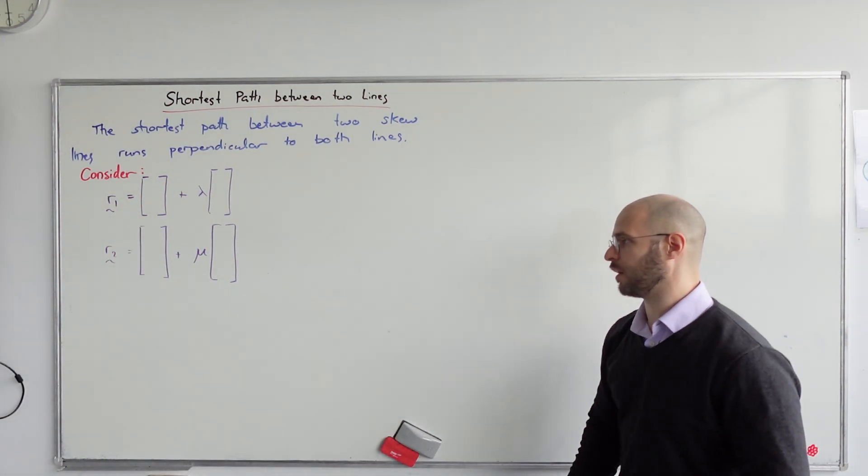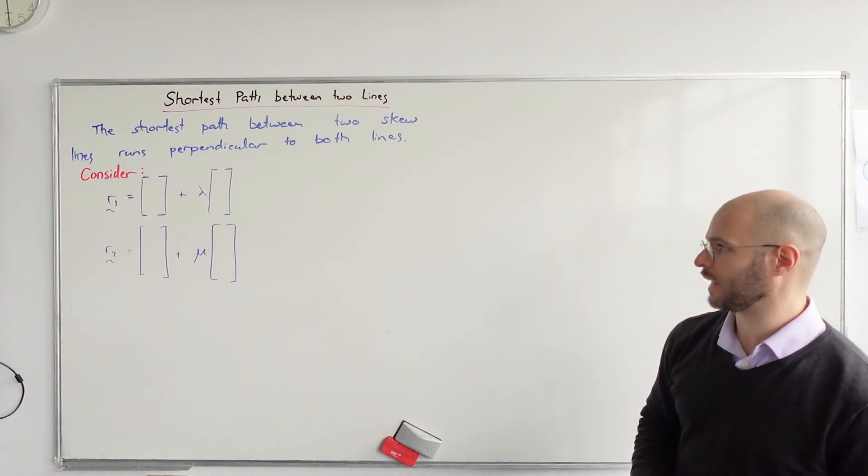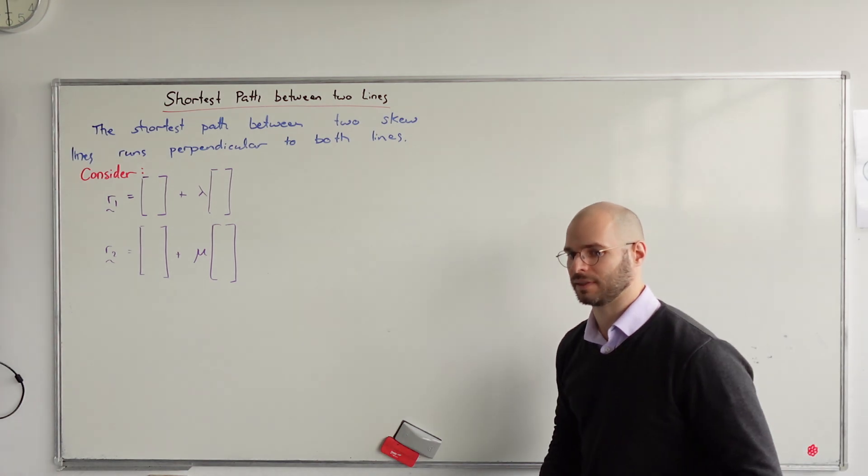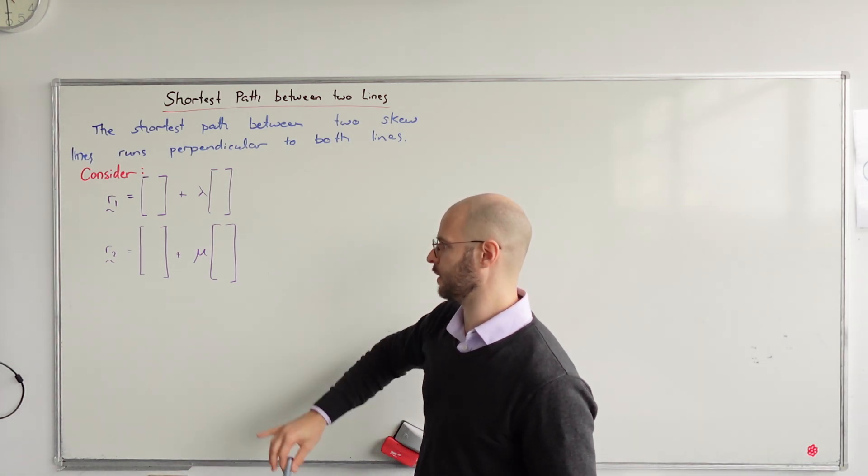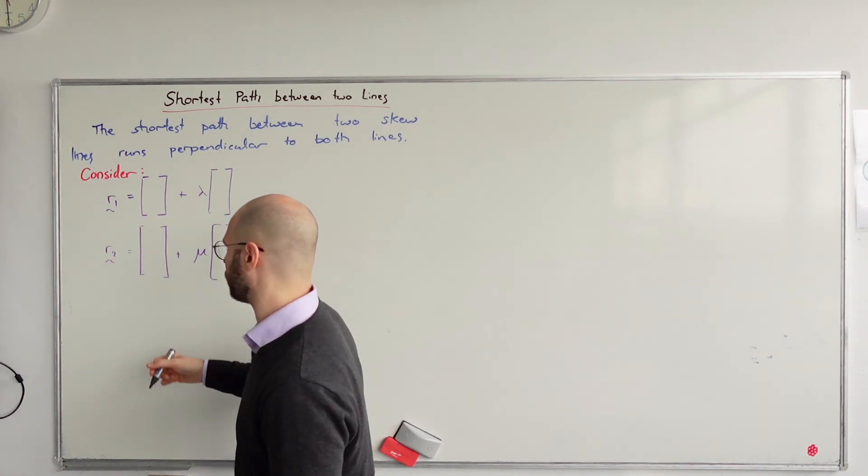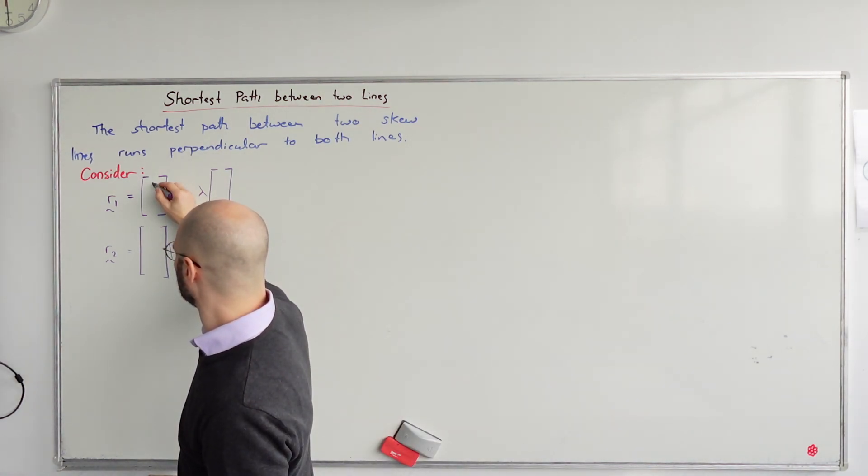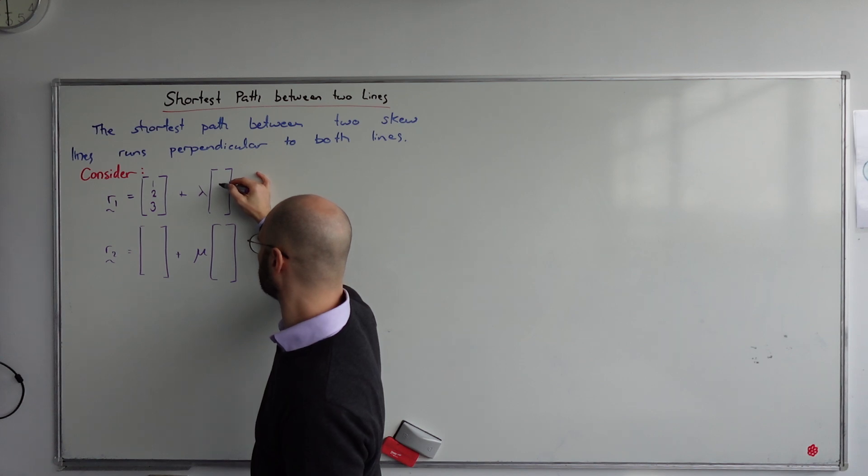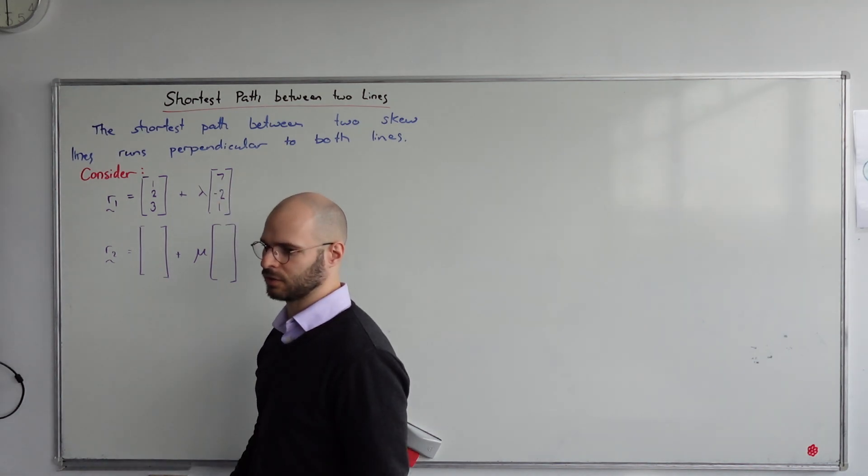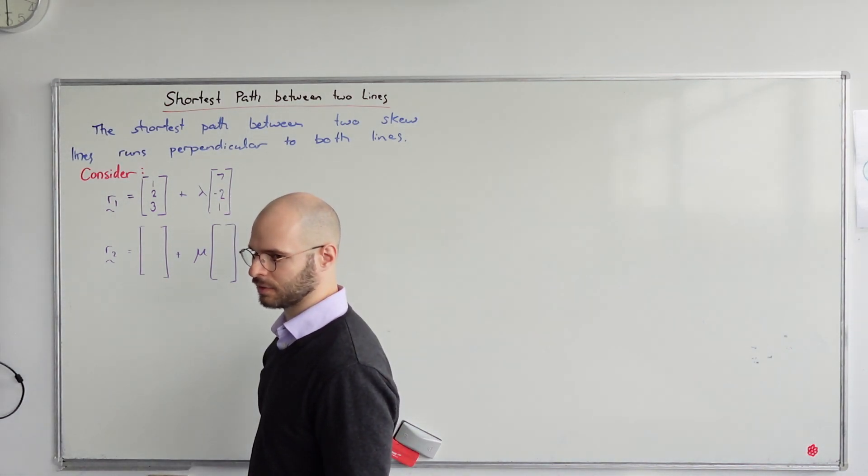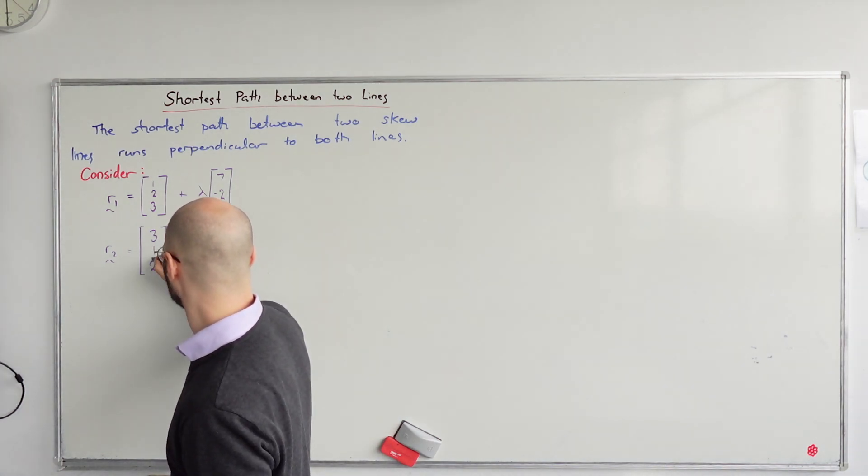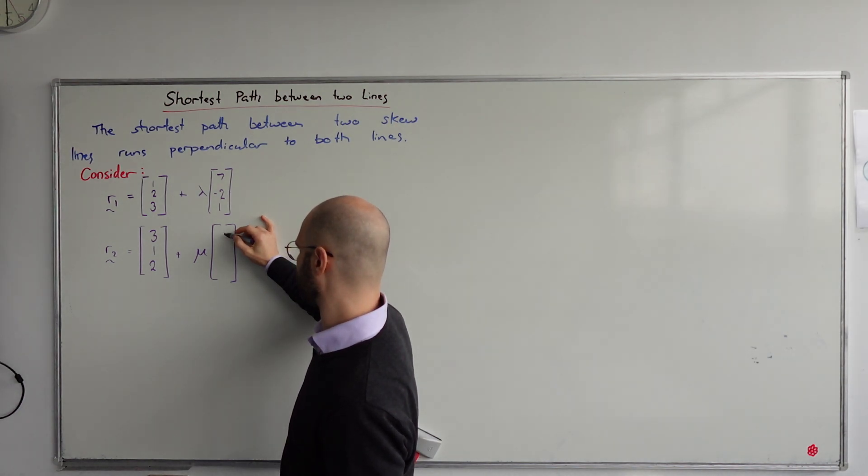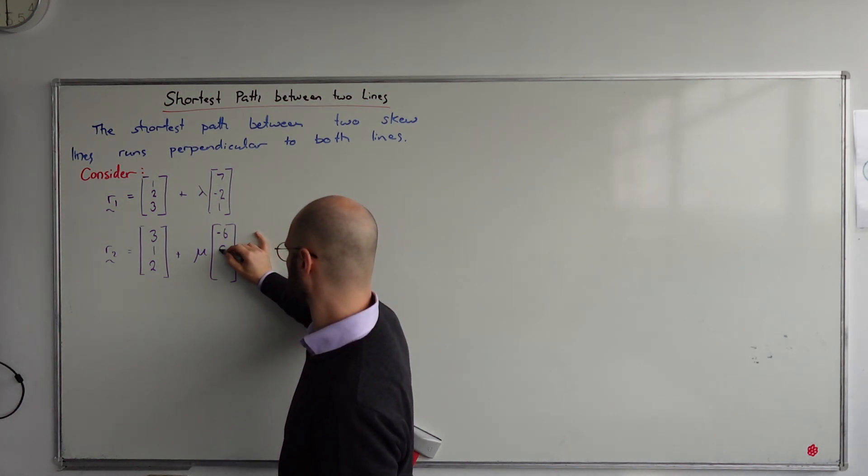We're going to learn how to find the shortest path between two skew lines, knowing that the shortest path between two skew lines is always going to be perpendicular to both of the lines. Line one, defined as r1, passes through point (1, 2, 3) and has direction vector (7, 1, -2). Line two passes through (3, 2, 1) with direction vector (-6, 8, -4).